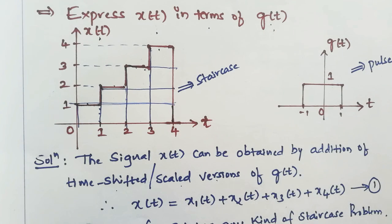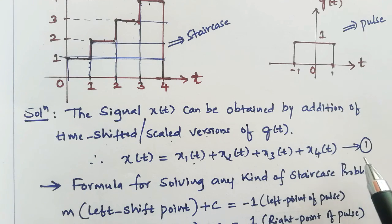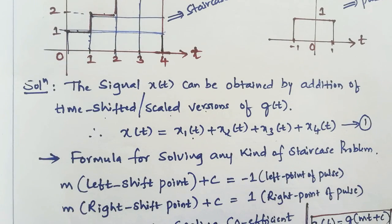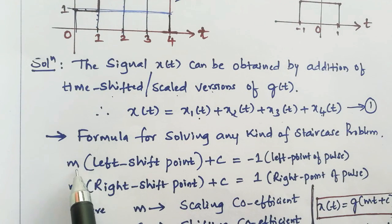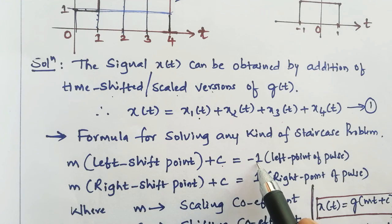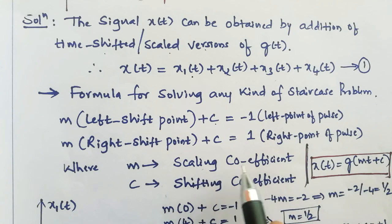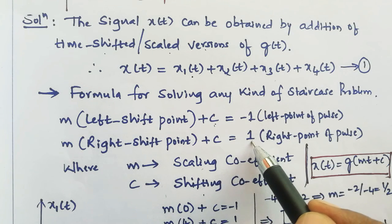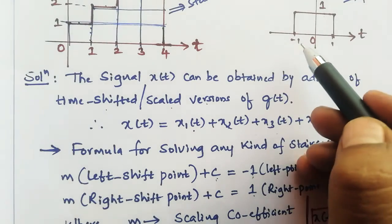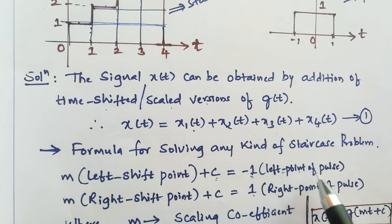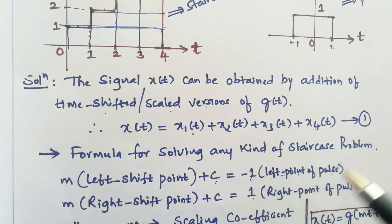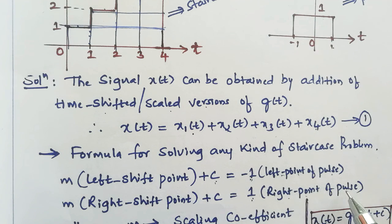I am going to express X of T in terms of four steps: X1 of T, X2 of T, X3 of T, and X4 of T — that is equation number one. The formula for solving any staircase problem is: M times (left shift point) plus C = −1, and M times (right shift point) plus C = 1. Here M is the scaling coefficient and C is the shifting coefficient. The left point of the given pulse is −1 and the right point is +1.